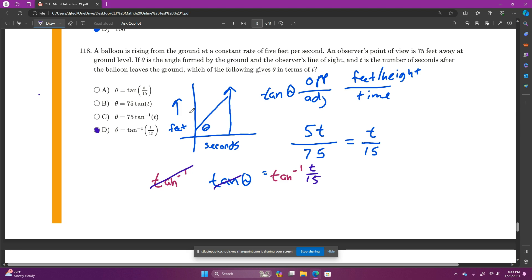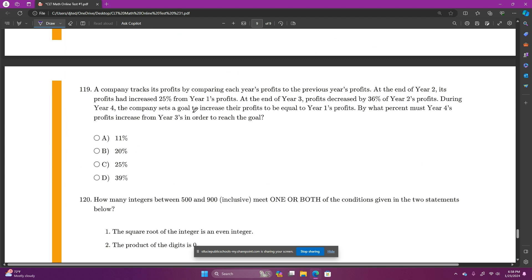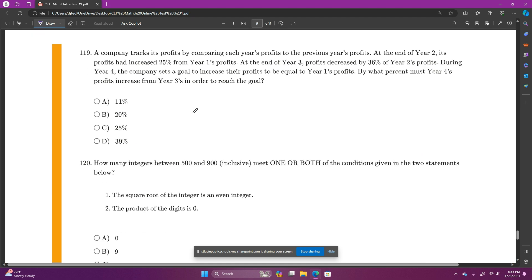And then we've just got two more questions. Number 119, I'm not going to spend a lot of time on this one. A company tracks its profits by comparing each year's profits to the previous year's profits. At the end of year two, its profits had increased 25% from year one's profits. At the end of year three, profits decreased by 36% of the end of year two's profits. During year four, the company sets a goal to increase their profits to be equal to year one's profits.